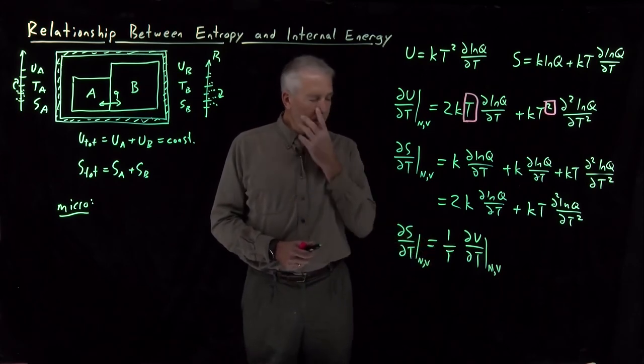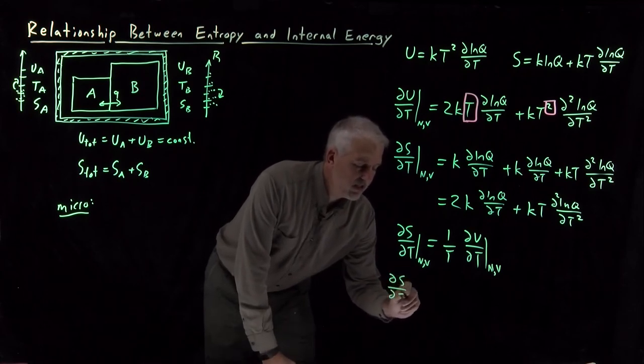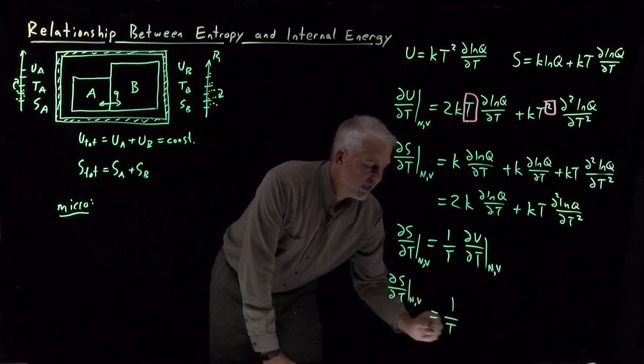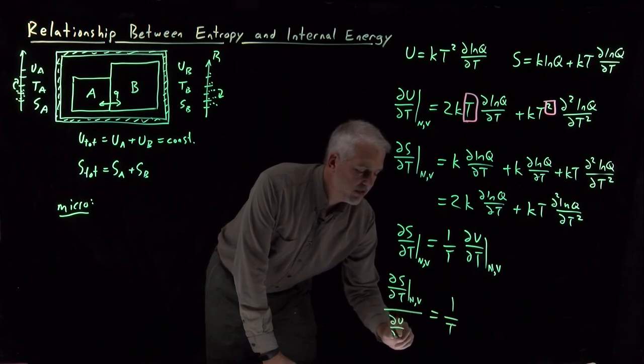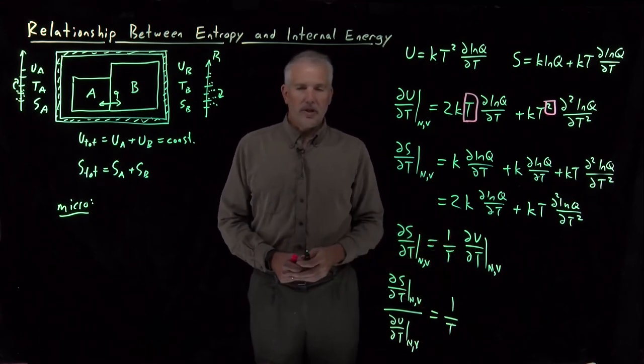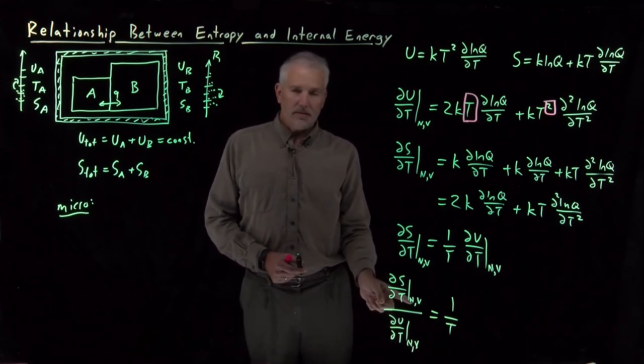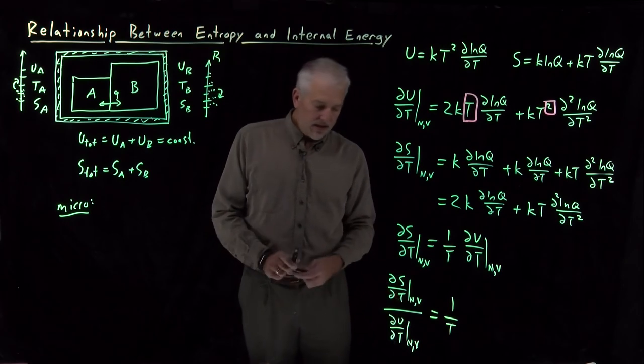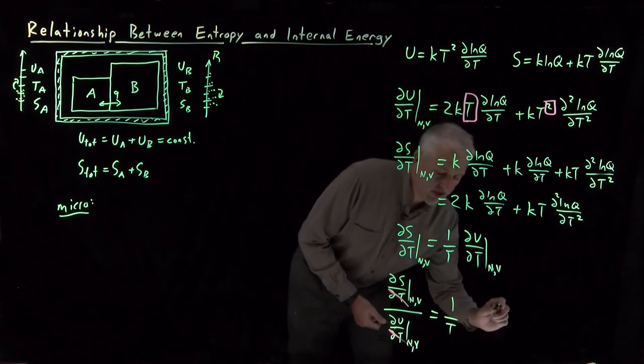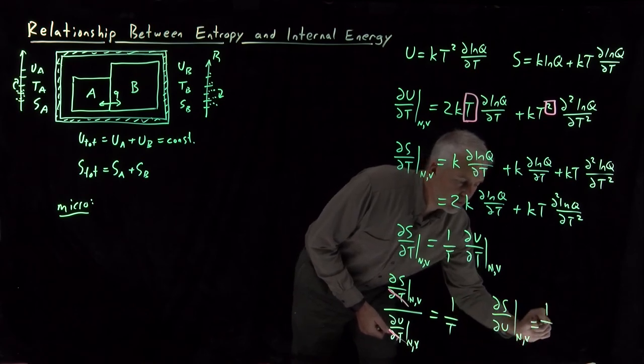So, we're almost to the key result here. If I rearrange this equation to say, let's leave dS dT over here. And, let's divide by that derivative dU dT. So, this derivative divided by this derivative is equal to 1 over T, because both of these are derivatives with respect to T at the same constant variables, constant n and v. The dT's cancel, and I can write that dS dU at constant n and v is equal to 1 over T.